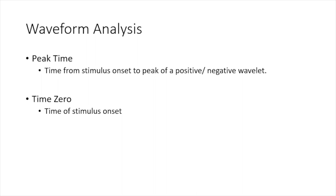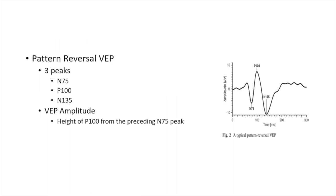For waveform analysis, two things need to be known: peak time, which is the time from stimulus onset to the peak of a positive or negative wave. For pattern reversal VEP, there are three peaks: N75, P100, and N135. N denotes a negative wave, P denotes a positive wave. The number after N or P represents milliseconds after stimulus onset. So N75 occurs approximately 75ms after stimulus onset, P100 around 100ms, and N135 around 135ms.